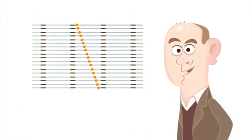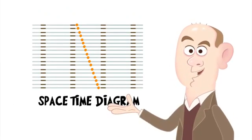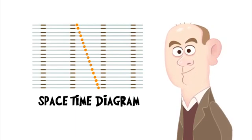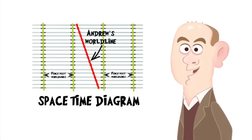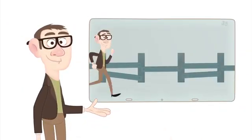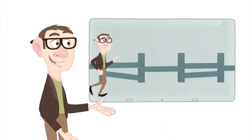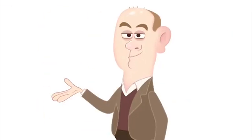The edge of this flipbook is known as a space-time diagram of Andrew's journey through, you guessed it, space and time. We call the line that represents Andrew's journey his world line. If I jog instead of walking, I might be able to get past a fence post every second. He's not very athletic.